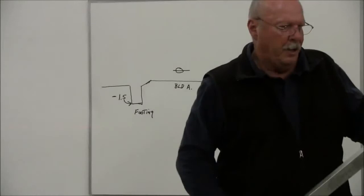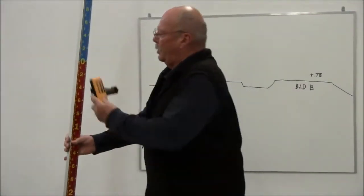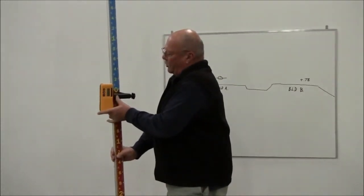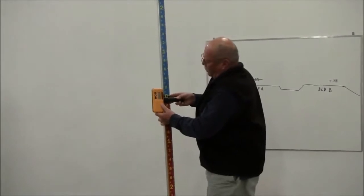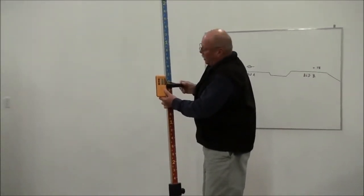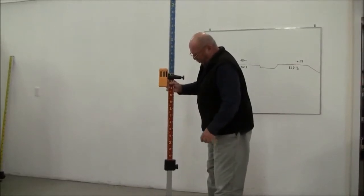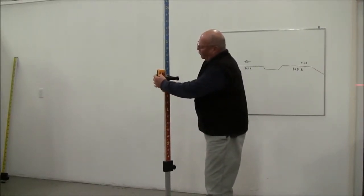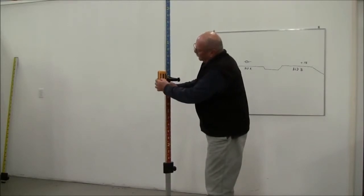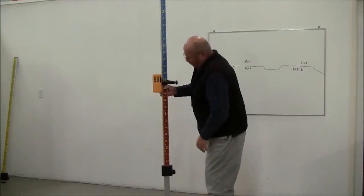What I'm going to do is I'm going to take the receiver. By the way, you can use either a laser or an optical instrument with this rod. You notice that the numbers are quite large so they're easy to see with an optical instrument, and obviously if you're using a laser they're easy to see as well. So I'm going to activate the receiver and laser receiver.